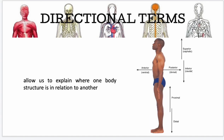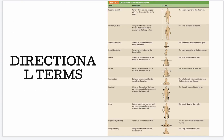These directional terms allow us to explain where one body structure is in relation to another. So again: anterior or ventral, posterior or dorsal, superior, inferior, proximal to the axial body, and distal.